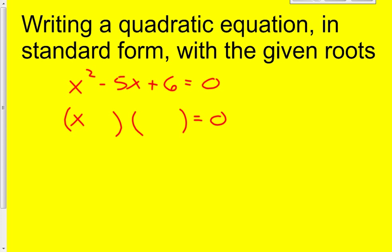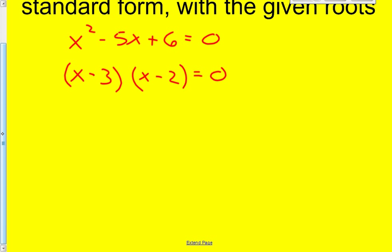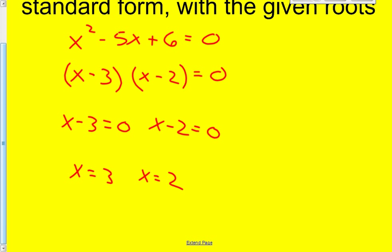So you would get x and x and a negative 3 and a negative 2. After factoring you would set each of these factors equal to 0. So x minus 3 equals 0 and x minus 2 equals 0, to make x equals a positive 3 and x equals a positive 2. So the roots you found are x equals 3 and x equals 2.